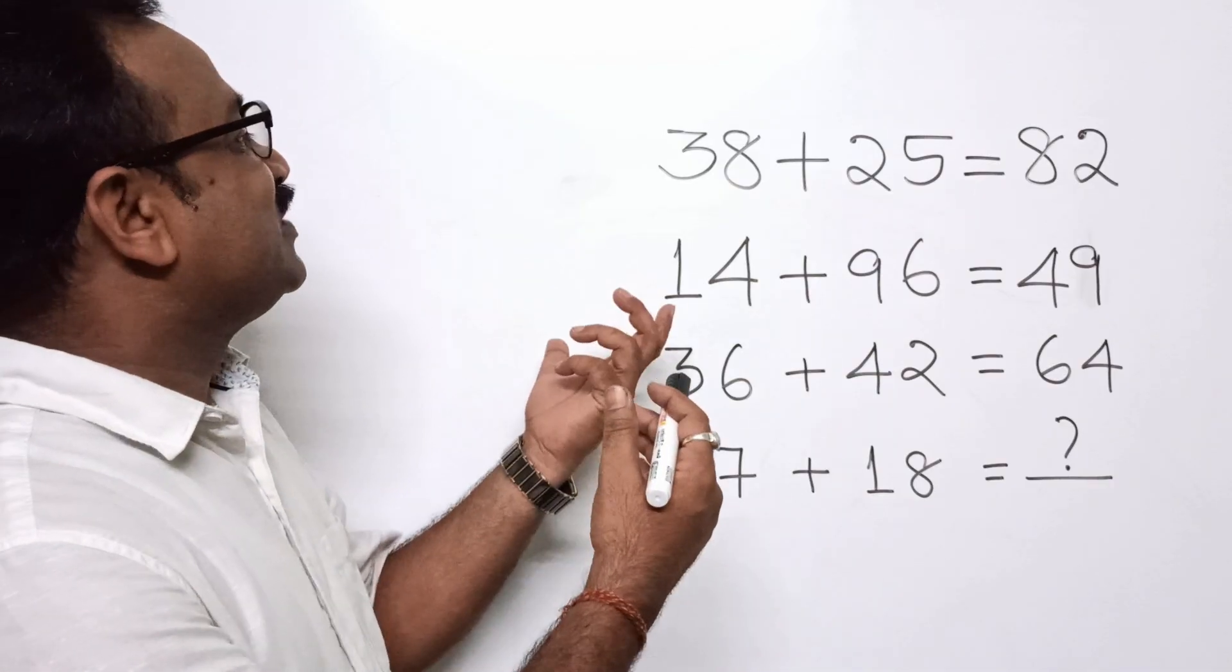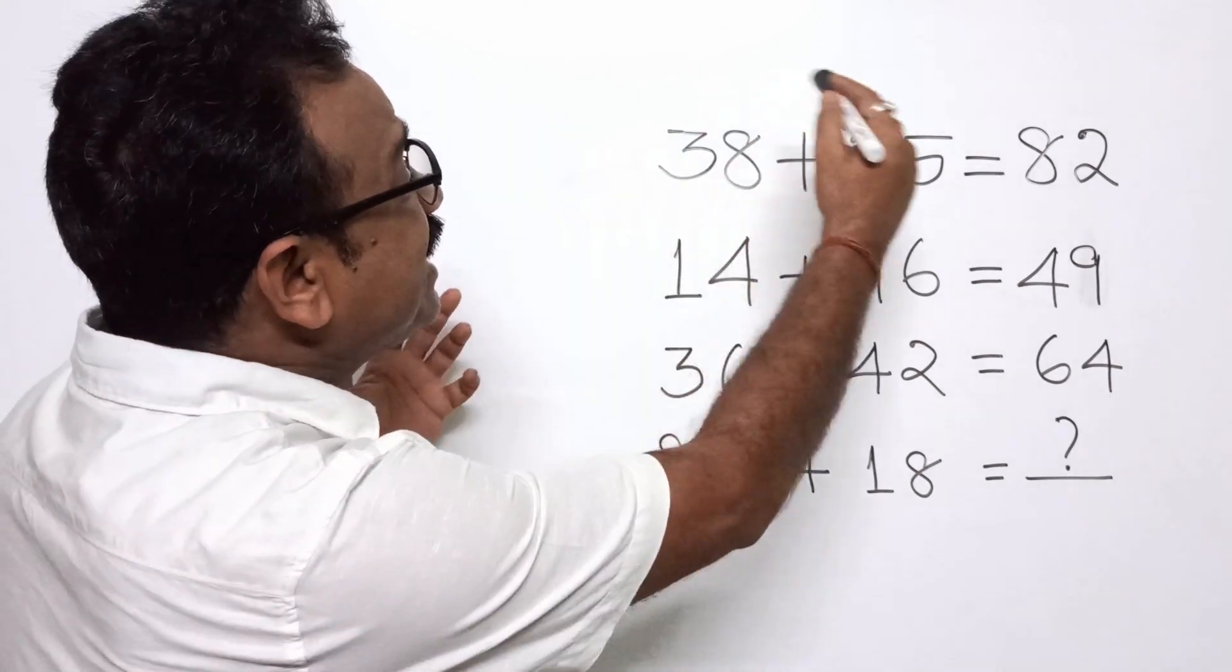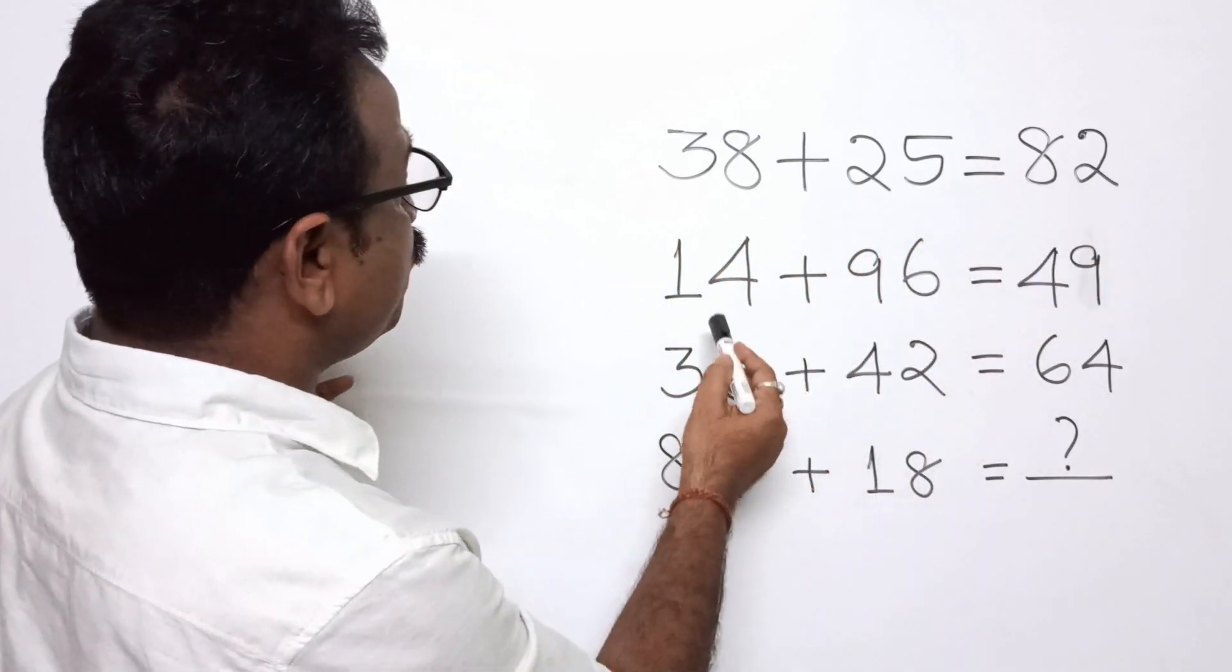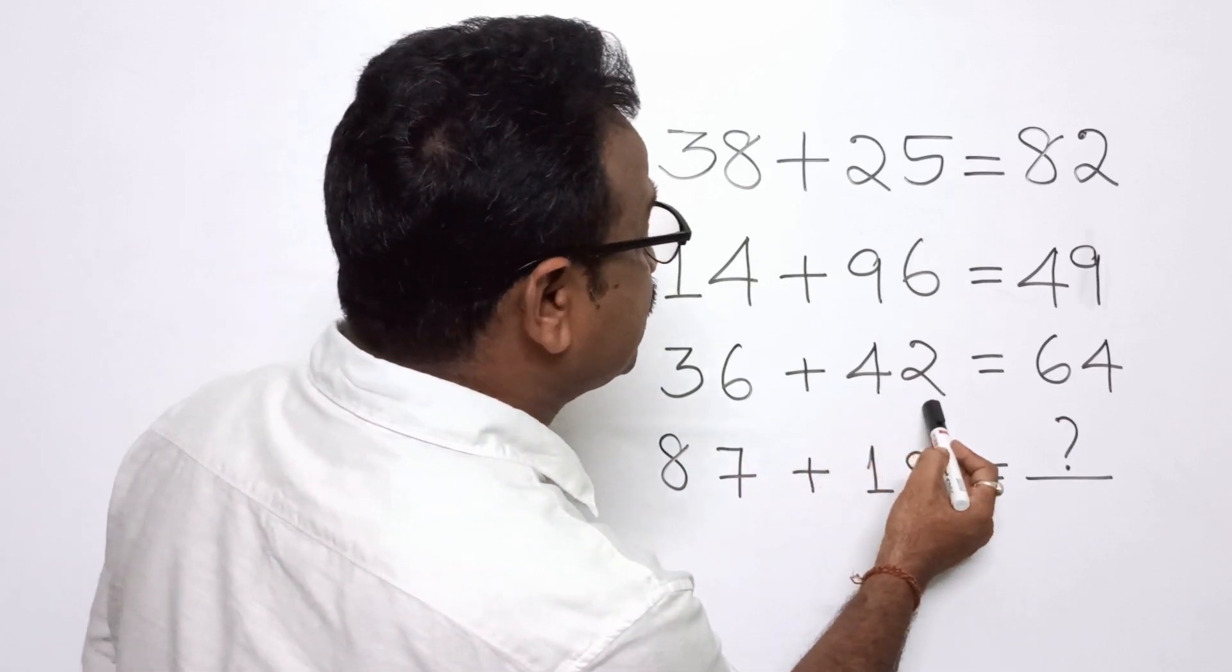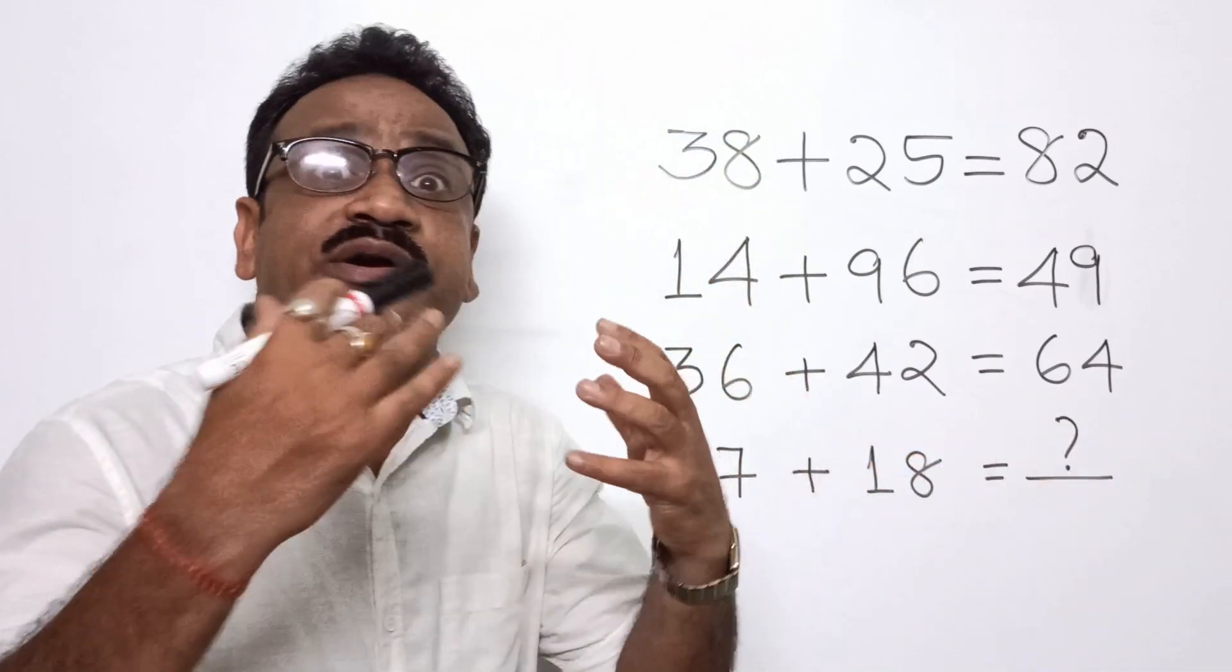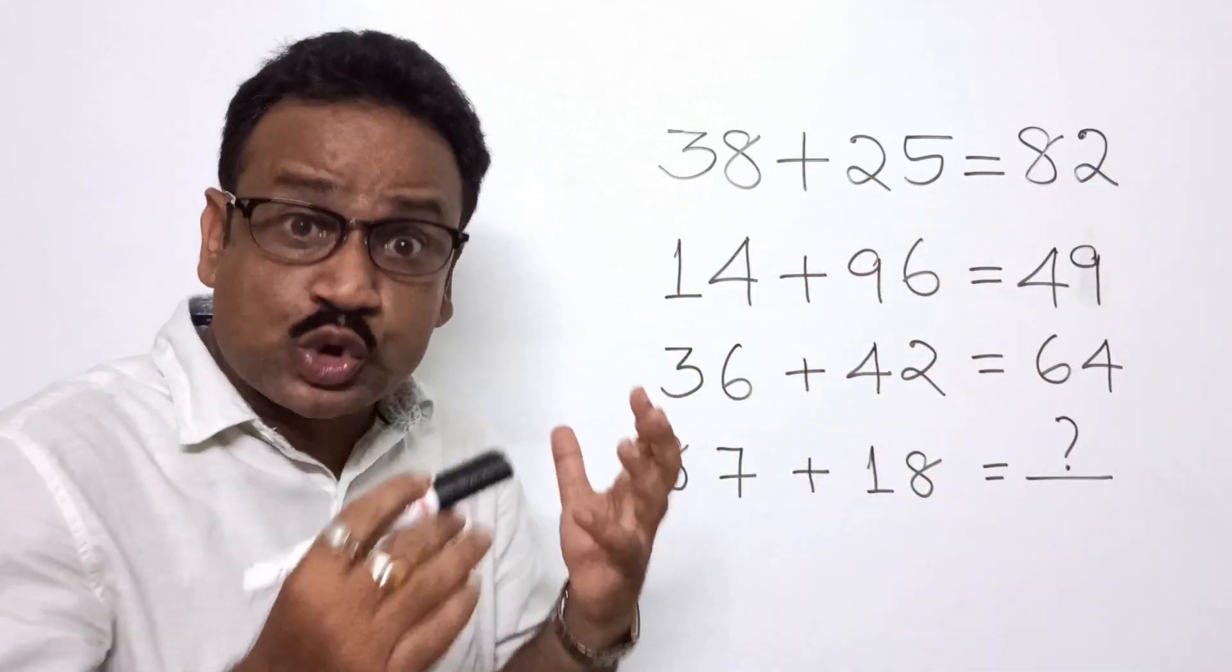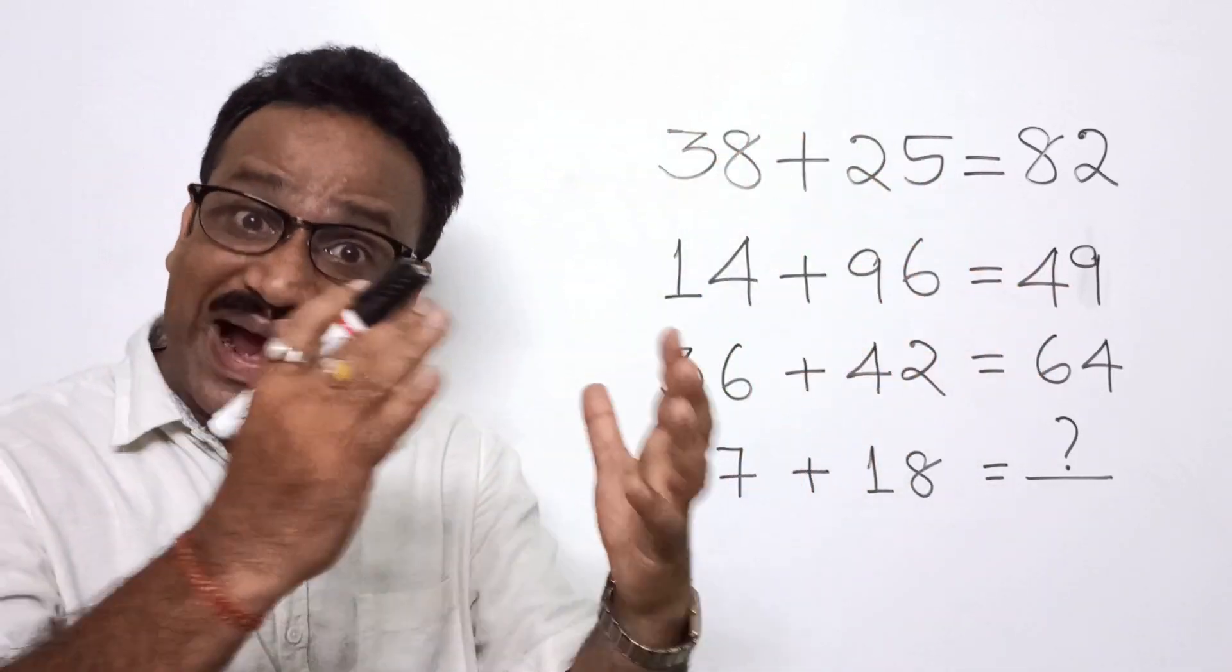So the exact question was displayed on your screen. Now we will see 38 plus 25 is equal to 82, 14 plus 96 is equal to 49, 36 plus 42 is equal to 64, 87 plus 18 is equal to this. So mathematically these are not true. Then how are we finding this? Let us see the pattern.